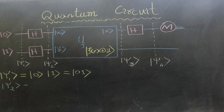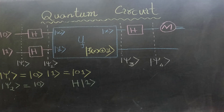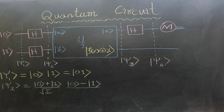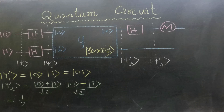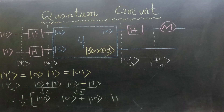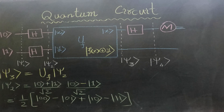To calculate |ψ2⟩ we apply Hadamard gates to both qubits. Applying a Hadamard gate to |0⟩ results in (|0⟩ + |1⟩) / √2. Similarly, applying a Hadamard gate to |1⟩ results in (|0⟩ − |1⟩) / √2. |ψ2⟩ can then be simplified to (1/2)(|00⟩ − |01⟩ + |10⟩ − |11⟩). To calculate |ψ3⟩ we apply the UF gate to |ψ2⟩.